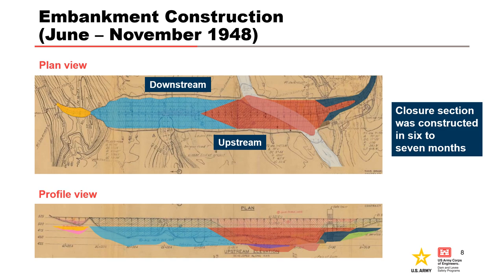In June 1948, the Pateau River was diverted through the outlet works. Over the next six to seven months, the channel was filled and the closure section of the embankment was constructed. The portion of the embankment shaded in blue was allowed to sit for 14 months prior to reservoir impoundment. The closure section shaded in red was completed approximately one and a half to two months prior to reservoir impoundment.